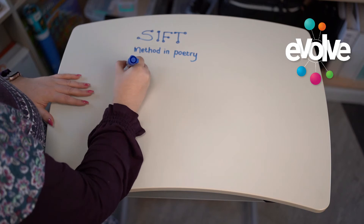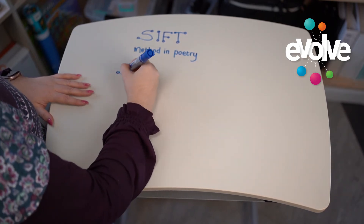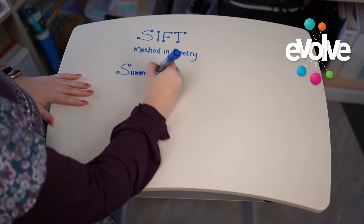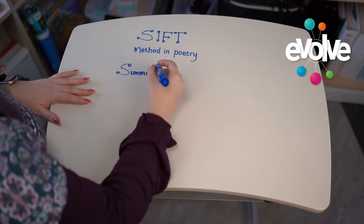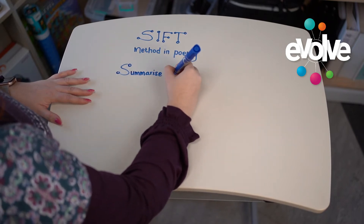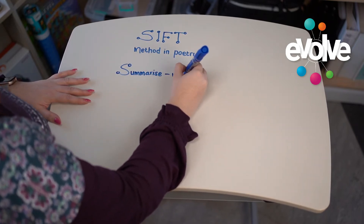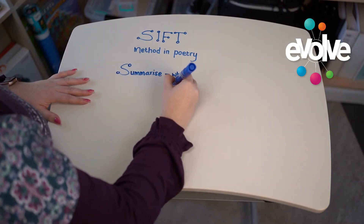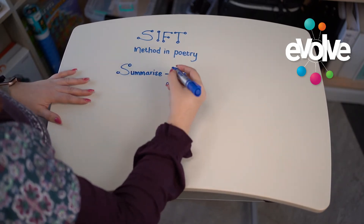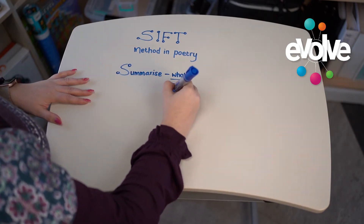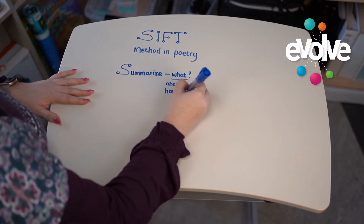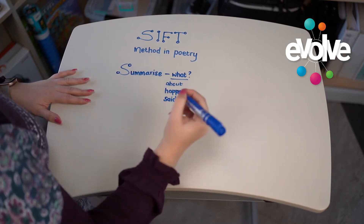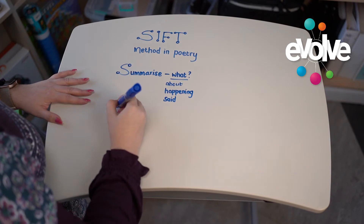Starting with the S, you are going to summarize what is happening in your poem. Ask yourself: what is it about, what is happening, and what is being said?